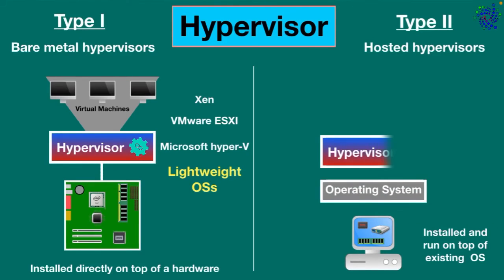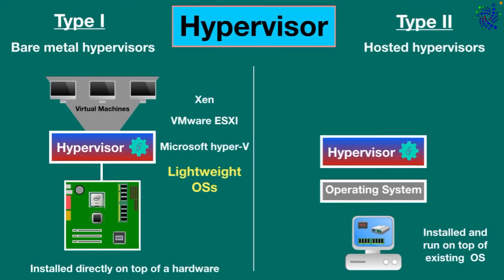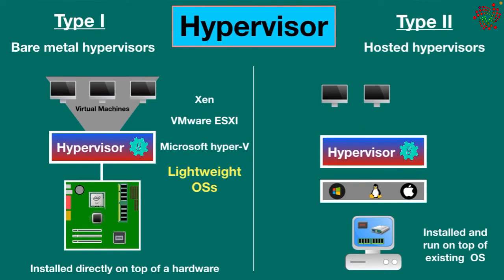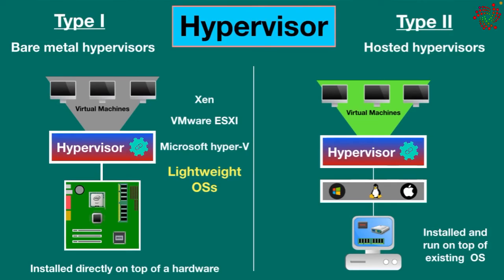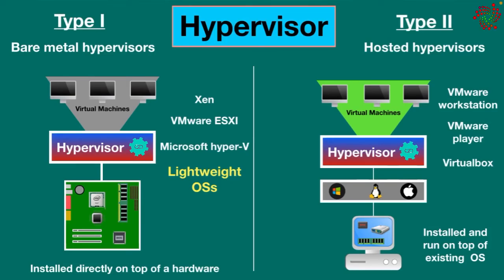Type 2, also known as hosted hypervisors, are installed and run on top of the existing operating system of the host machine. They run as a software program on top of a traditional operating system such as Windows, Linux, or Mac. Virtual machines are created and managed through the host operating system. Examples of Type 2 include VMware Workstation, VMware Player, and VirtualBox.